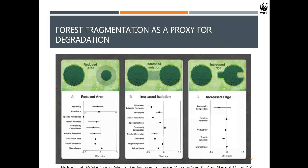Let's talk about forest fragmentation — this is the simpler method. The first level of my three-part research is a simpler spatial analysis. The figure from Haddad et al. shows a meta-analysis of impacts from changes in forests, such as reduced area, isolation of forest patches, or increases in edge. You might be monitoring your forest for REDD and your forest area is not changing, but you still have edge effects that will affect productivity, community composition, and microclimates. That's really what we're trying to tackle with forest degradation.